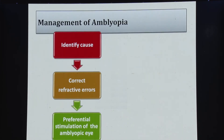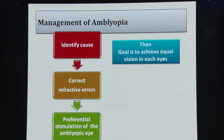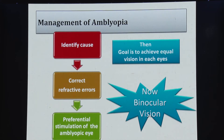The basic concept still remains the same: identify the cause, correct the refractive error, and provide preferential stimulation of the amblyopic eye. We still need to give the amblyopic eye an edge over the normal eye so that it gets stimulated. What has changed is the goal — previously the goal was to achieve equal vision in both eyes, but nowadays the goal is to achieve binocular vision and restore binocularity.